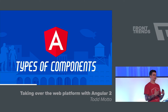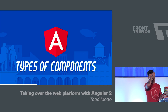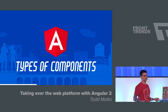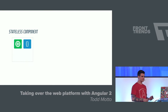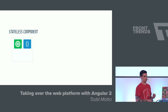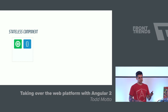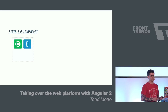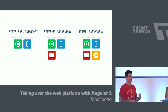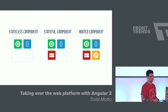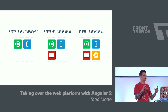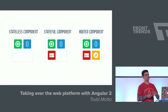Now you get component architecture from a high level. There are actually different types of components. When we all started building websites or web apps, we'd make a complete mess. Now we can think about the types of components we're creating. You may have heard the word stateless component — we also have a stateful component, and a rooted component. These are basically the three types we'll be building with on the web.